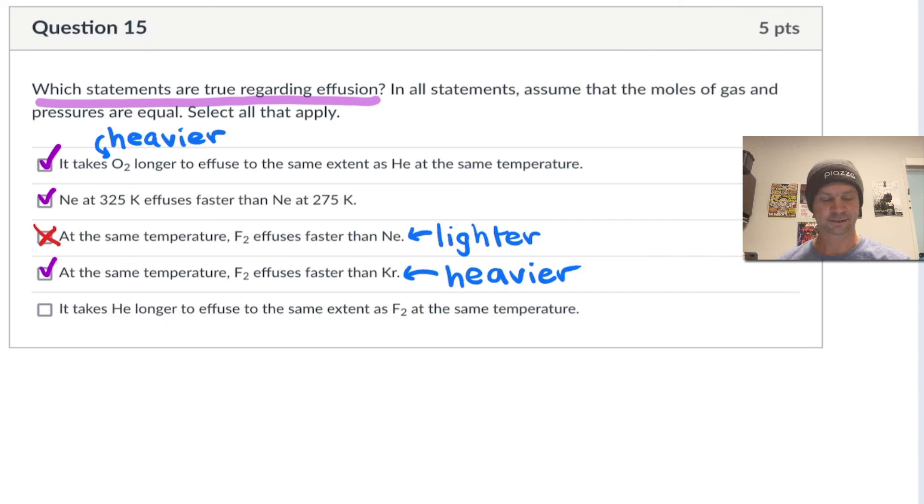And then the last item here asks about helium and F2. Now, helium is quite a bit lighter than F2. And so it will effuse more rapidly and take less time to effuse than F2. So this statement is, in fact, false. It takes He quite a bit less time to effuse to the same extent as F2. So the big message here is all about the dependence of effusion rate and the time required for effusion on temperature and molar mass for a gas when the moles and pressure of the gas are held constant.